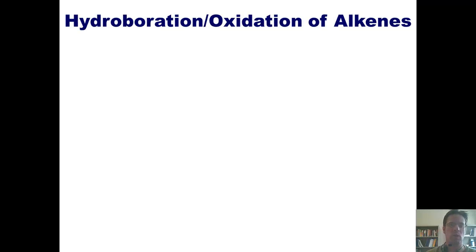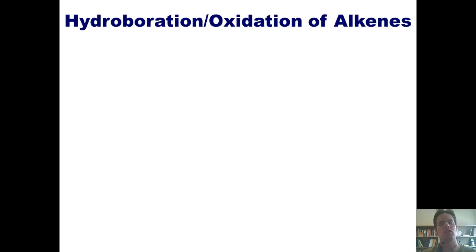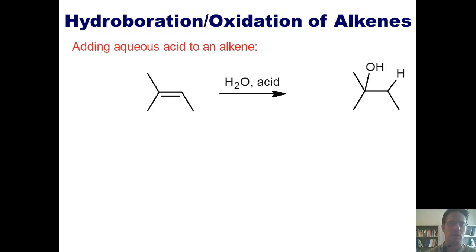The reason I reviewed what happens when an alkene and an alkyne are treated with aqueous acid is so you can clearly contrast and compare those reaction conditions with hydroboration oxidation. If we take a regular alkene and treat it with aqueous acid, what ends up happening is we place an OH on the internal carbon — the one that would generate the more stable carbocation intermediate in the mechanism.